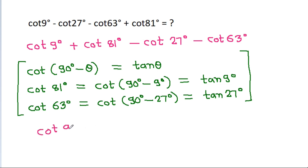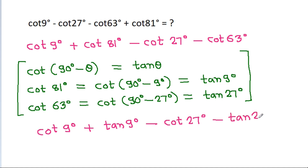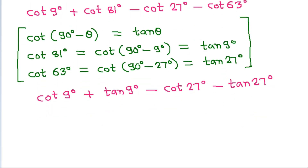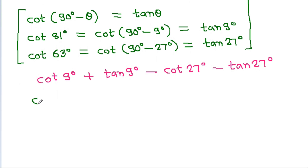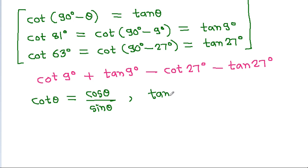So, the expression becomes: cot 9° plus tan 9° minus cot 27° minus tan 27°. Here, cot θ equals cos θ by sin θ, and tan θ equals sin θ by cos θ.